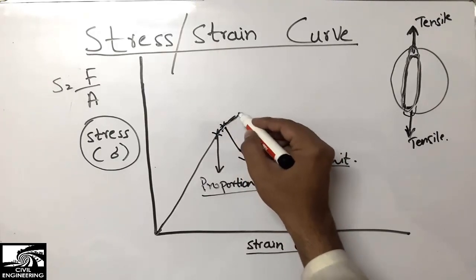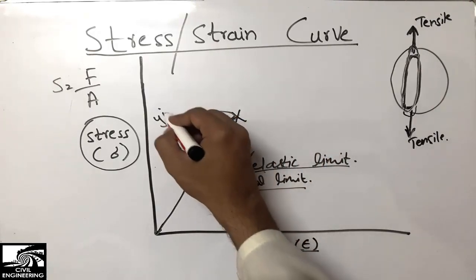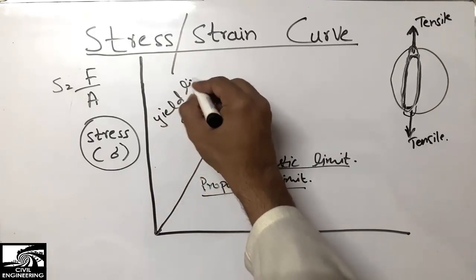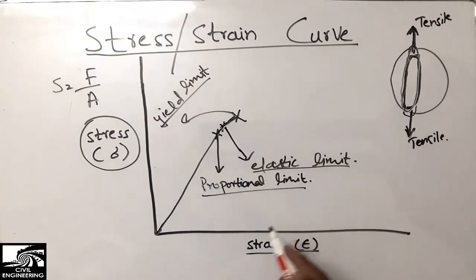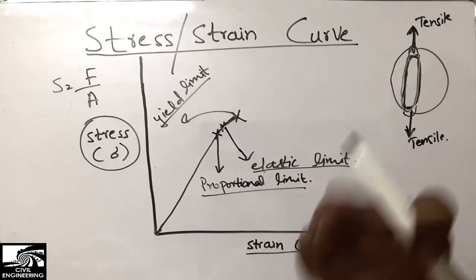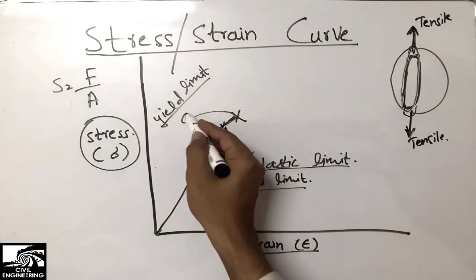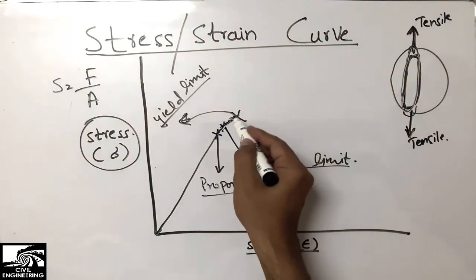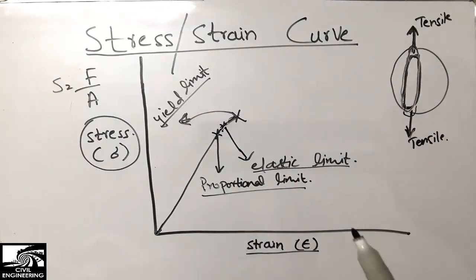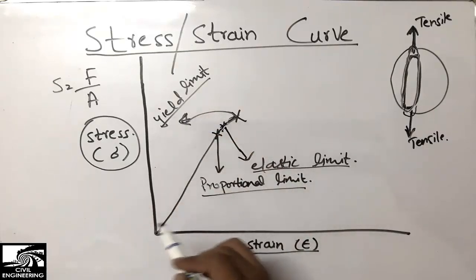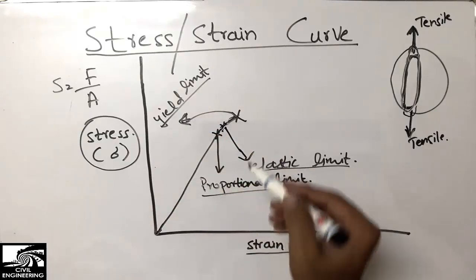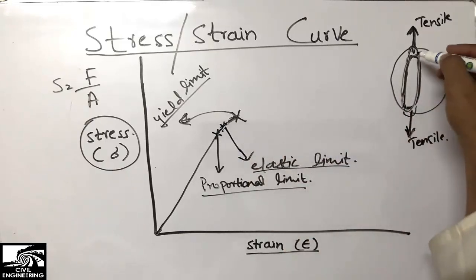After the elastic limit, we move further to the yield limit. This is the third point on the stress-strain curve. At the yield limit, the bar shows a notable increase in strain without much additional load being applied. The point where significant strain occurs without significant additional load is called the yield limit.